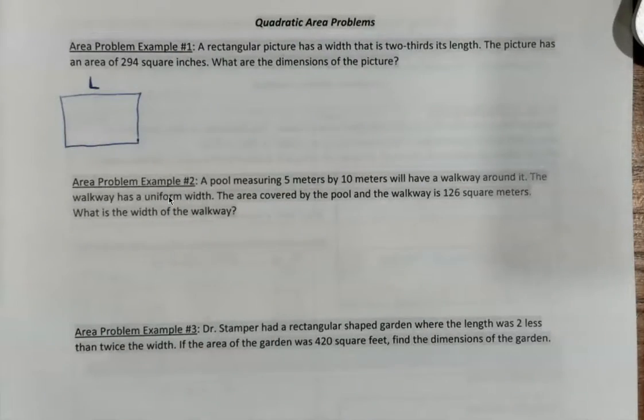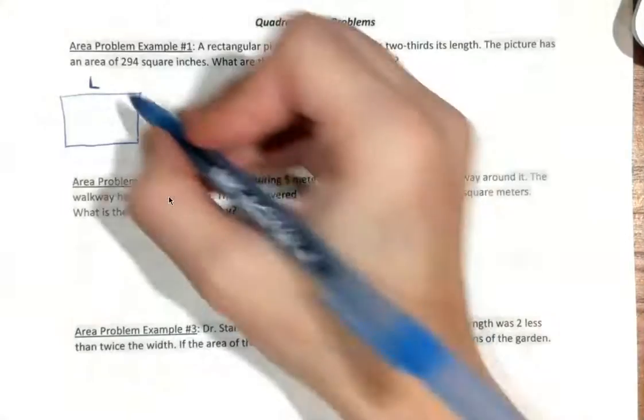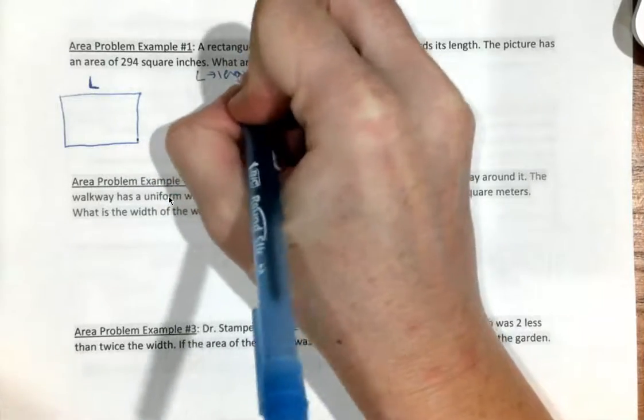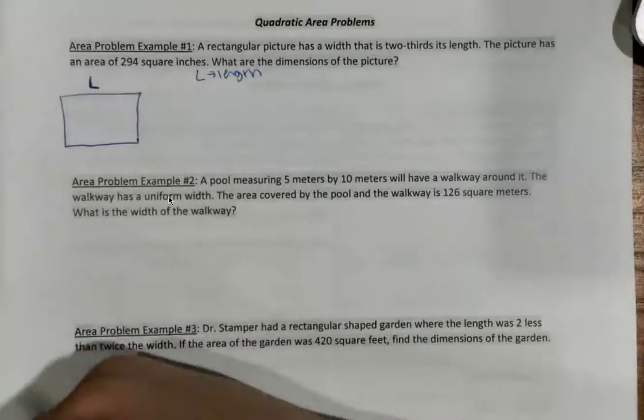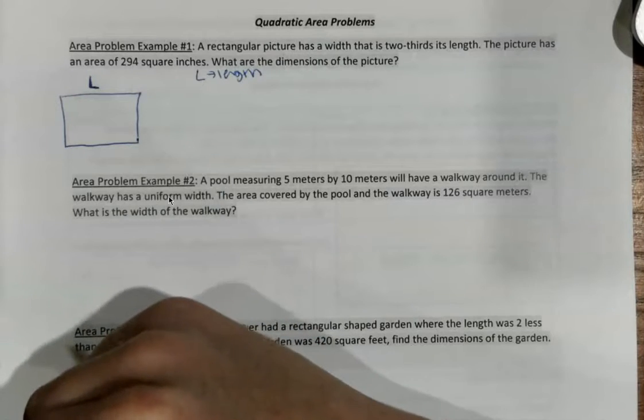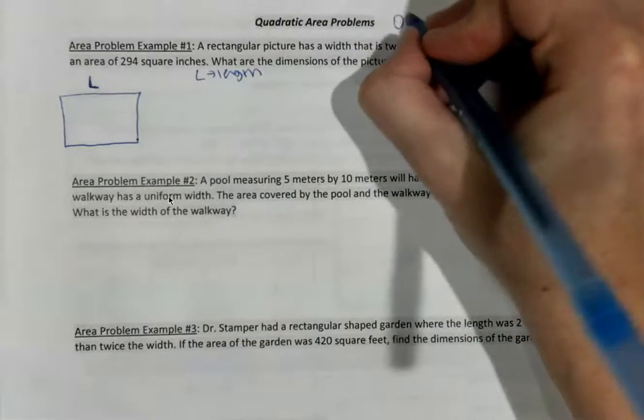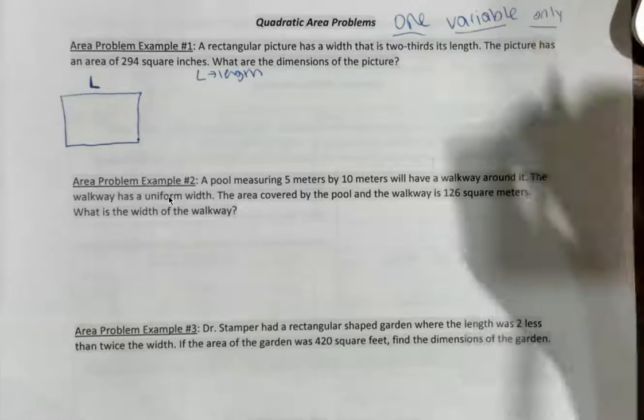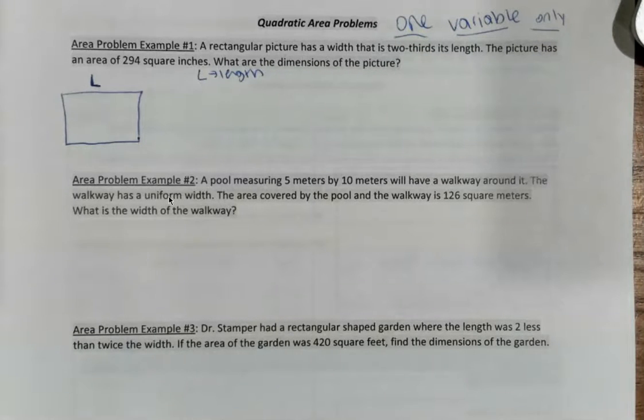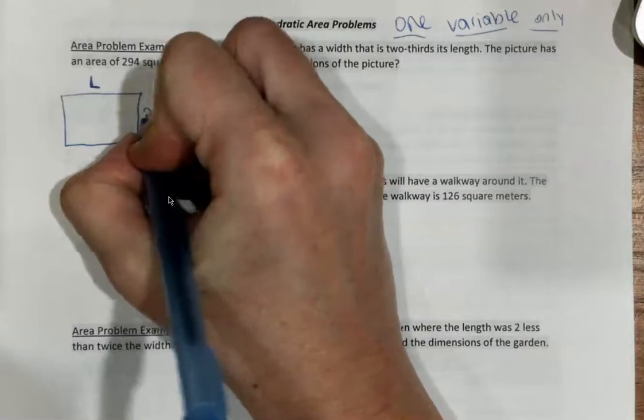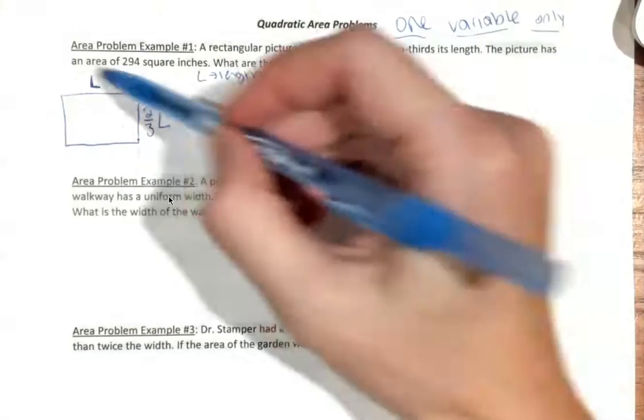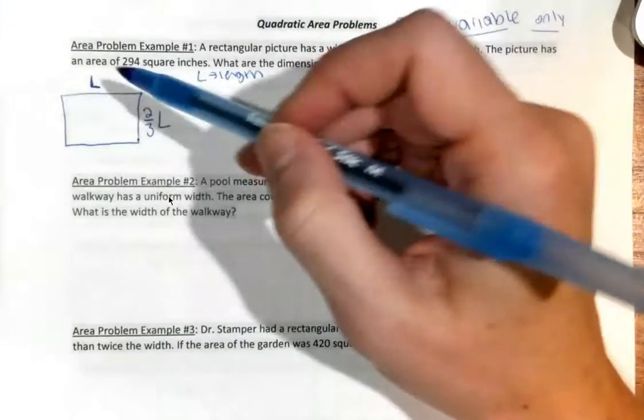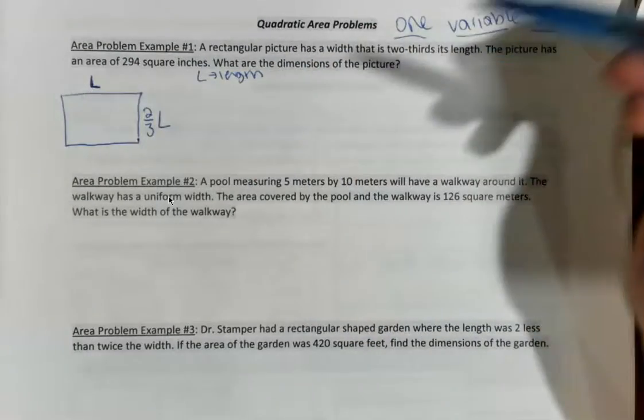A rectangle has a width that is two-thirds of its length. Let's say I'll use capital L for length. Now, I want to write all of this in one variable because I can, and that way I can solve it. The variable I've chosen is L, and L stands for length. It's really important that we use one variable only with these problems. That way, we can solve them.